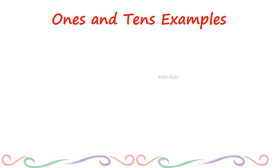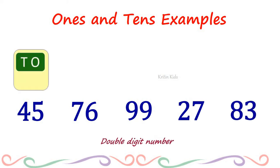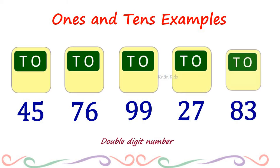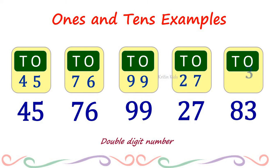Let's check some random numbers: 45, 76, 99, 27, 83. These are all double digit numbers. When you look at the number 45, the value of 5 — that is the right side number — has place value of 1s, and 4 has place value of 10s. Likewise, these are the place values of the other remaining numbers.